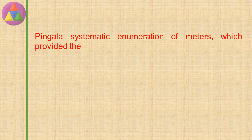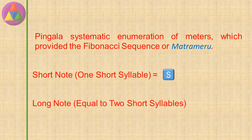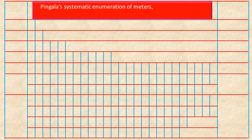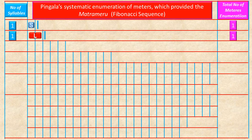Pingala's systematic enumeration of meters provided the Fibonacci sequence, or Matra Meru. A short note equals one short syllable, denoted by S. A long note equals two short syllables, denoted by L. For one syllable, using one short syllable (S), the total possible enumeration is only one. For one syllable using one long syllable (L, which equals two short syllables), the total possible enumeration is also only one.